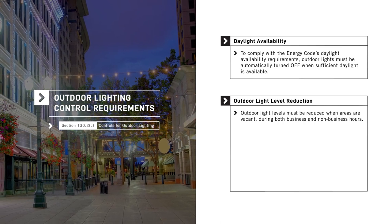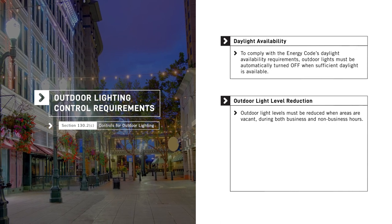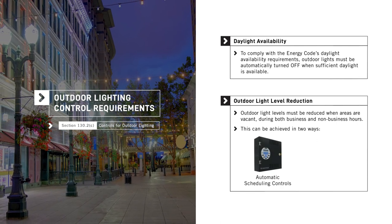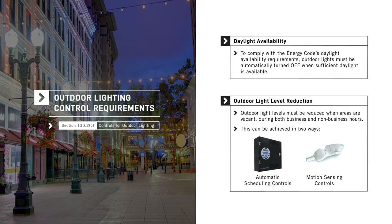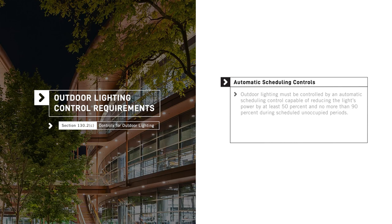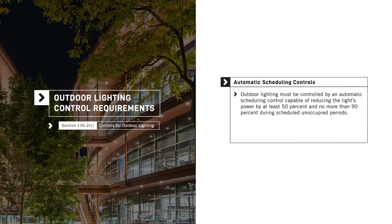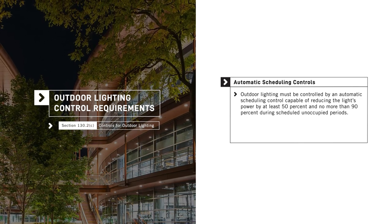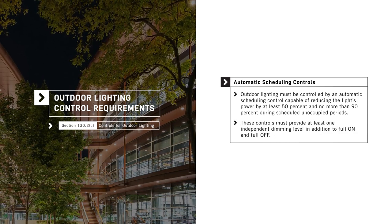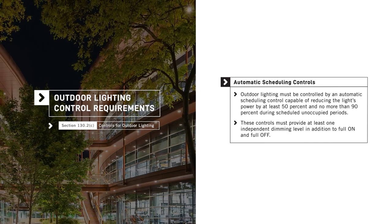The Energy Code also requires that outdoor light levels be reduced when areas are vacant during both business and non-business hours. This is achieved two ways: one, automatic scheduling controls, and two, motion sensing controls. All outdoor lighting must be controlled by an automatic scheduling control capable of reducing the light's power by at least 50 and no more than 90 percent during scheduled unoccupied periods. These automatic scheduling controls must provide at least one independent dimming level, in addition to full-on and full-off.